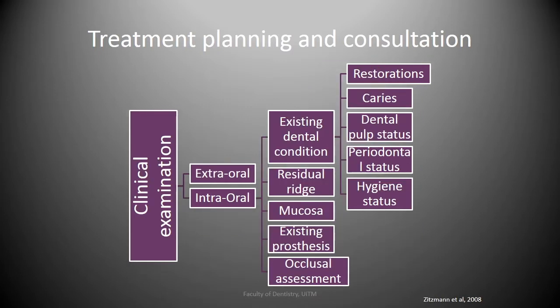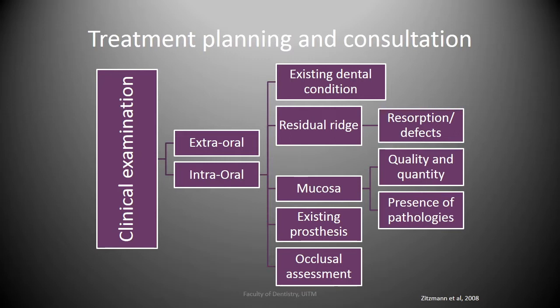The following intraoral parameters should be recorded. The first is the existing dental condition — all teeth should be examined for restorations and caries, pulpal and periodontal condition should be assessed, and oral hygiene status should be recorded. The second is the residual ridge, assessed for resorption or defects, which could be vertical, horizontal, or combined. The third is mucosal quality and quantity, and the presence of pathologies. The fourth is existing prostheses, assessed for retention, stability, support, and appearance. Finally, a complete occlusal assessment should be recorded, and any parafunctional habits highlighted.